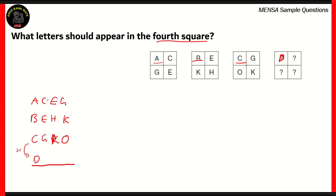Now let's look at the top-right corner of the four squares. It begins with C, then E in the second square, and G in the third square. E is the second letter after C, and G is the second letter after E. So G is followed by H, which is then followed by I. Therefore the top-right corner of the fourth square is I.